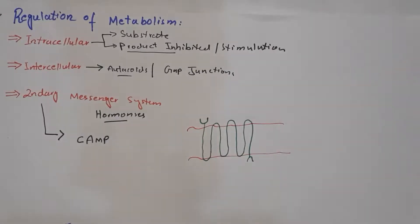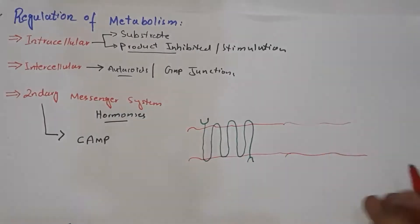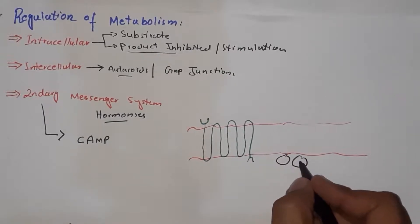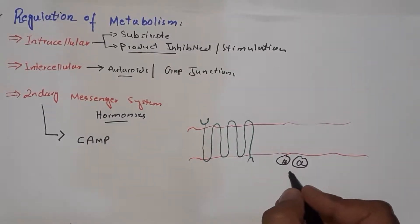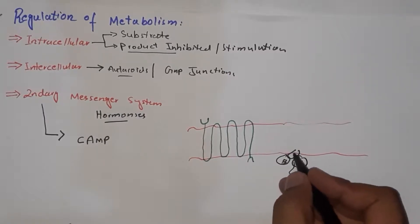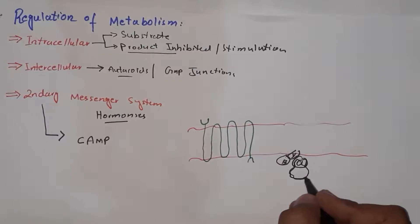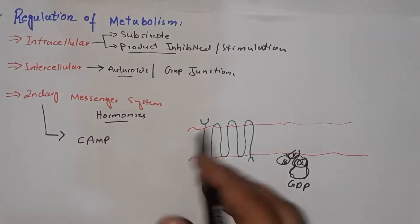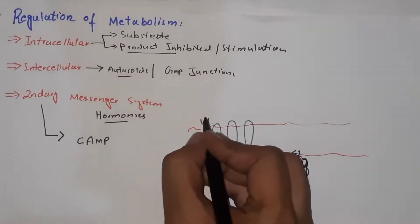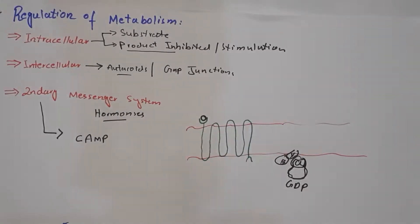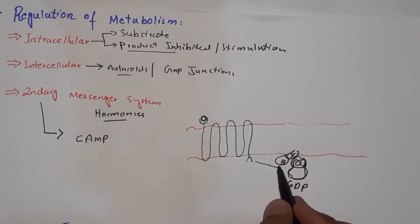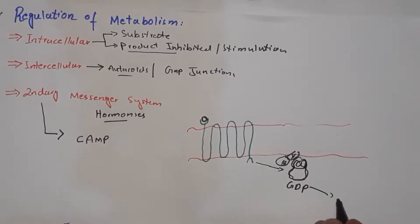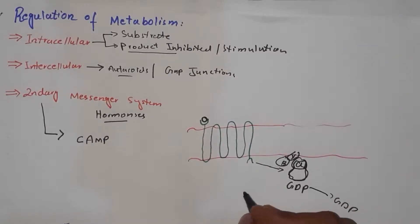Inside the membrane lies a G protein, which has three subunits: an alpha subunit, a beta subunit, and a gamma subunit. The alpha subunit is the largest and is normally linked to GDP. When a hormone comes and binds to the receptor, there is a conformational change in the receptor which triggers and activates this G protein. As a result, the alpha subunit releases GDP.